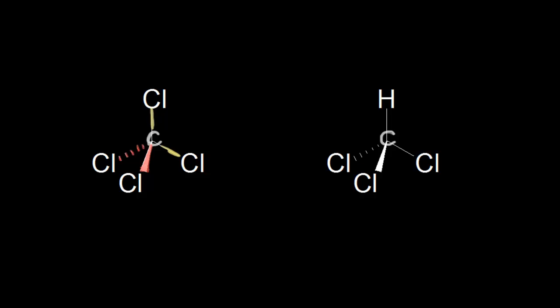Starting with our electronegativity differences: for the top carbon-chlorine bond, chlorine is more electronegative than carbon, so those electrons are pulled closer to the chlorine. The same is true for all the chlorines, so we can draw four individual bond dipoles. In this case, those four dipoles cancel out in three dimensions. It's tough to visualize on a two-dimensional surface, but if you have the molecule in front of you, you can see that rotating it always looks the same. The individual bond dipoles cancel, there's no dipole moment, mu equals zero, and carbon tetrachloride is nonpolar.